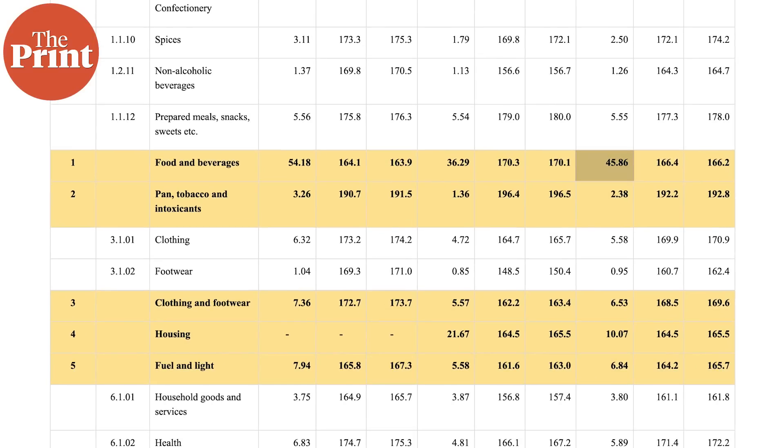Under the food basket there are cereals, meat and fish, eggs, milk products, oils and fats, fruits, vegetables, pulses — any of the items that we consume is under this basket. Under the miscellaneous category there is health, transport, communication, education, and personal care.